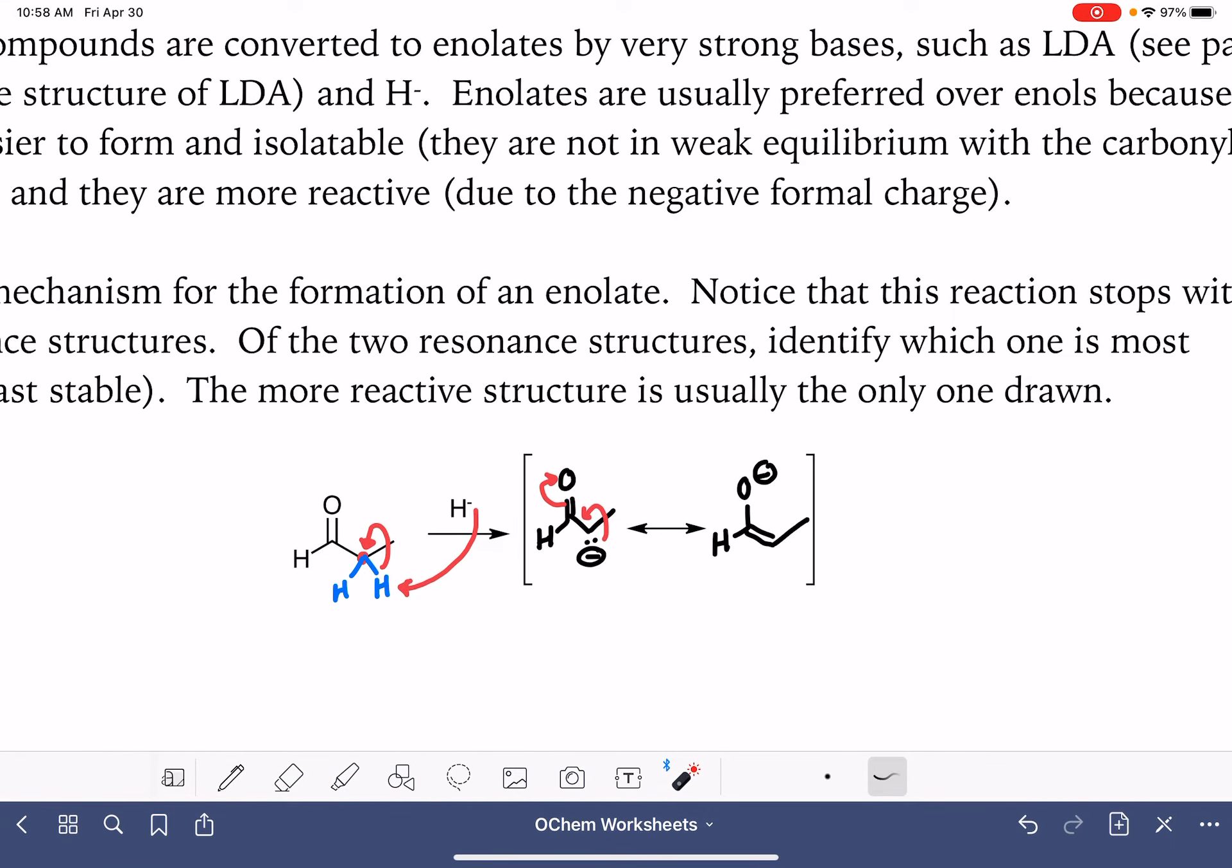Of these two resonance structures, we have one that has a negative formal charge on the carbon atom. We have one that has a negative formal charge on the oxygen atom. Using our trick of the more electronegative atom with the negative formal charge, we know that this version of the enolate is more stable because having a negative charge on an oxygen atom is more stable than having a negative charge on a carbon atom. Because this is the more stable form, it is the form that is less reactive. This form, which is less stable because the negative charge is on a carbon atom, is the more reactive form.